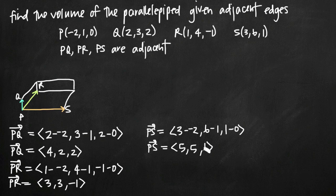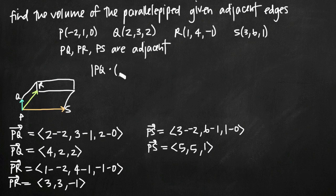We can use those three vectors in our scalar triple product to find volume. For the scalar triple product, we take the cross product of two of our vectors, and then the dot product of our third vector with the result of that cross product. Specifically, we take the dot product of vector PQ with the cross product of PR and PS.